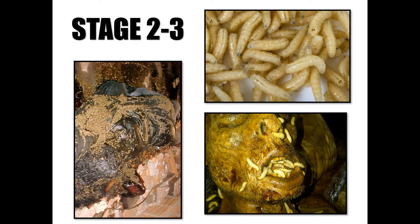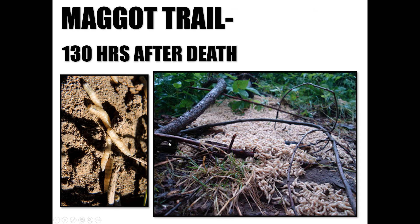Here are some images of instar two and instar three maggot activity. The picture in the upper right-hand corner shows instar two — you can identify it by the two posterior spiracles visible on the maggot. Instar three maggots will have three posterior spiracles. This is what's referred to as a maggot trail: after the eggs hatch and the maggots go through instar one, two, and three, after they're done feeding they crawl away from the body looking for a dry, dark place to undergo metamorphosis.